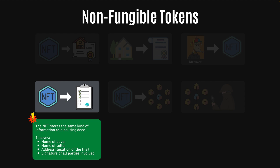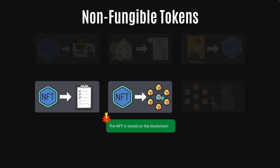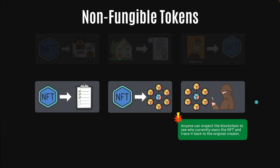Just like a housing deed stores information about the house, an NFT stores the same kind of information about the digital file. It saves the name of the buyer, the seller, and the address — in this case, the location of the file, like a web address of the file it's referring to. It also has the signature of all the parties involved. Then that NFT gets stored onto the blockchain, and anyone can inspect the blockchain to see who currently owns an NFT. They can even trace the ownership all the way back to the creator.